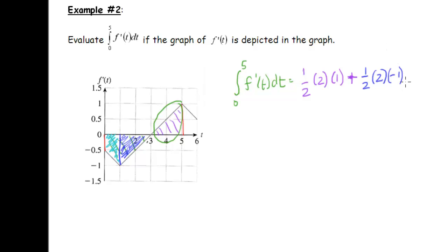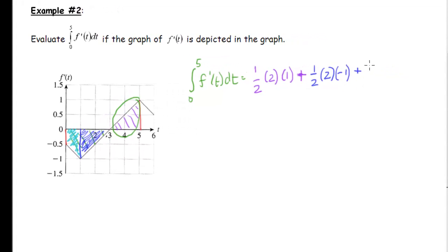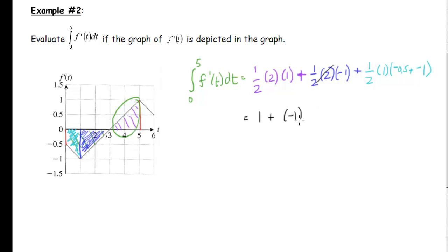Then for the trapezoid: one half times base 1 times the sum of the two heights (negative 0.5 plus negative 1), which is one half times 1 times negative 1.5 = negative 0.75. Adding everything together: 1 plus negative 1 plus negative 0.75 = negative 0.75. So the value of the definite integral from 0 to 5 of f′(t) dt is negative 0.75.